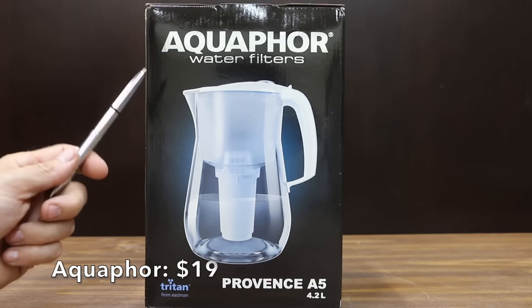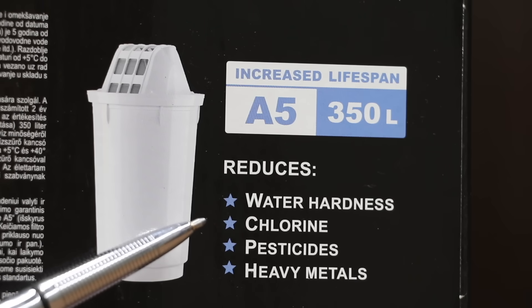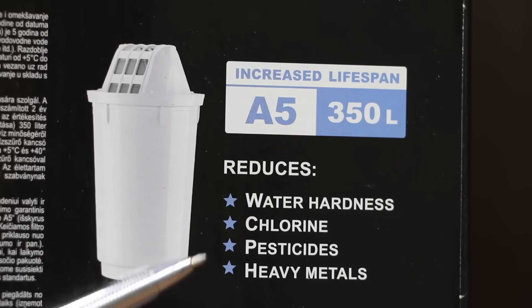At a price of only $19, the least expensive brand we'll be testing is made by Aquaphor. The A5 filter reduces water hardness, chlorine, pesticides, and heavy metals. We're going to test that.